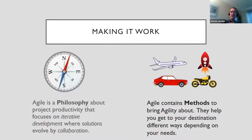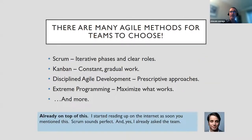Agile is a philosophy — how a project should run iteratively, with solutions evolving by collaboration, not necessarily having a full plan. You bring it about with what are called Agile methods — techniques you've probably all heard of: Scrum, Kanban, extreme programming. They're ways to embody the philosophy of Agile — a people-oriented, solutions-based, communicative approach. There are a lot of them. Scrum is iterative and has clear roles; Kanban is constant-flow work; disciplined Agile development is more prescriptive; extreme programming is maximization-focused. Cy has already read up on it and decided he wants to use the Scrum methodology.